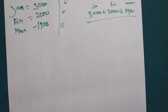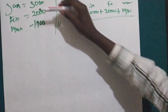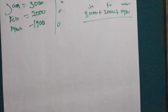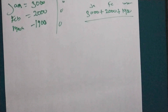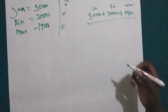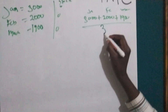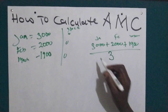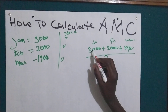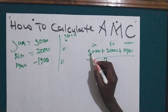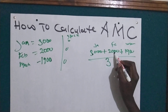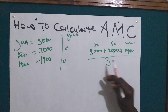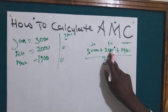Then we are going to divide by 3, because there are 3 months, to get the average monthly consumption. So we divide the total — which is 5000 — wait, 6900 — by 3.